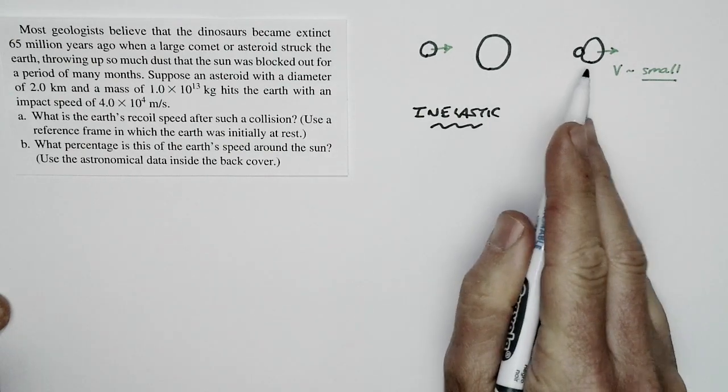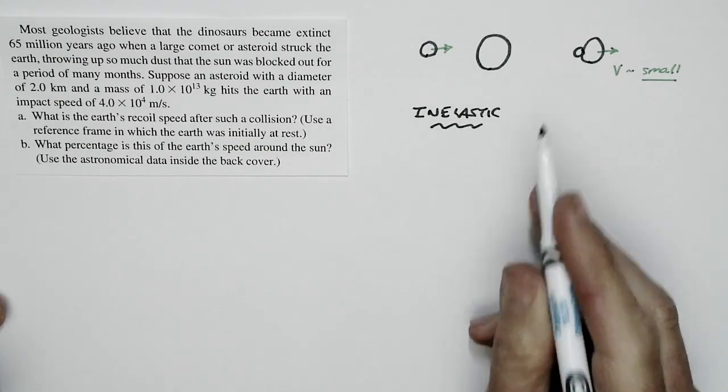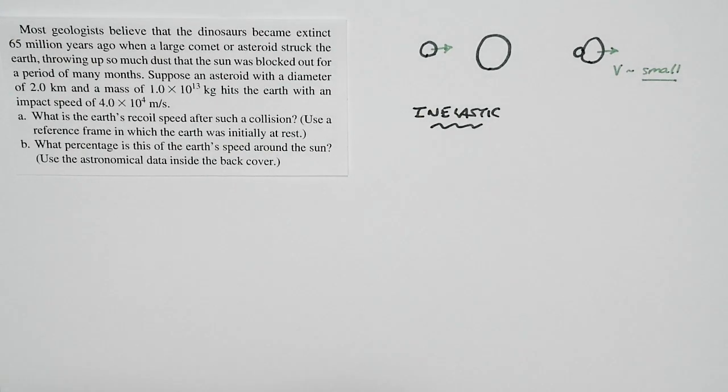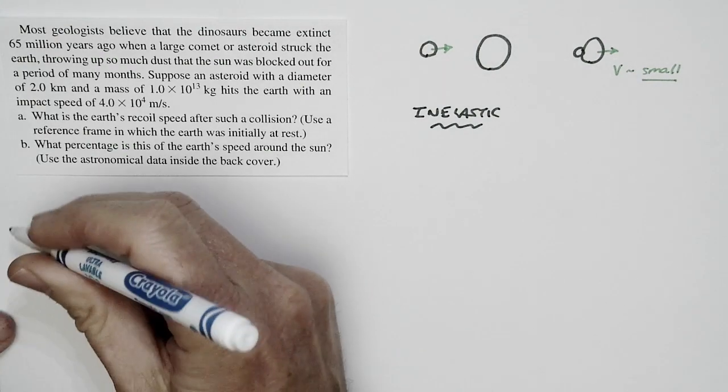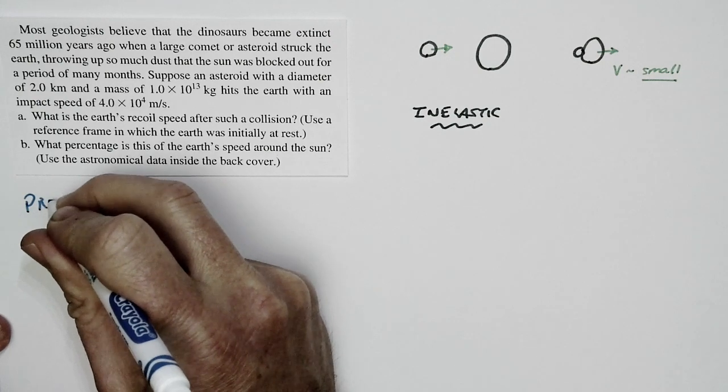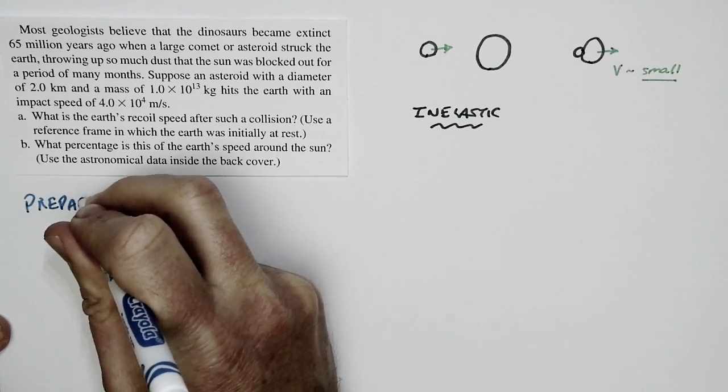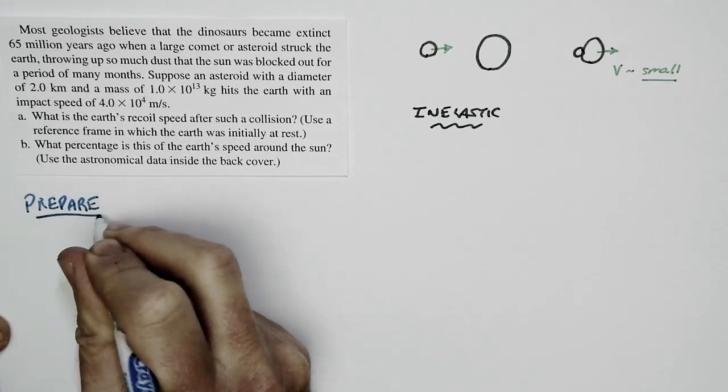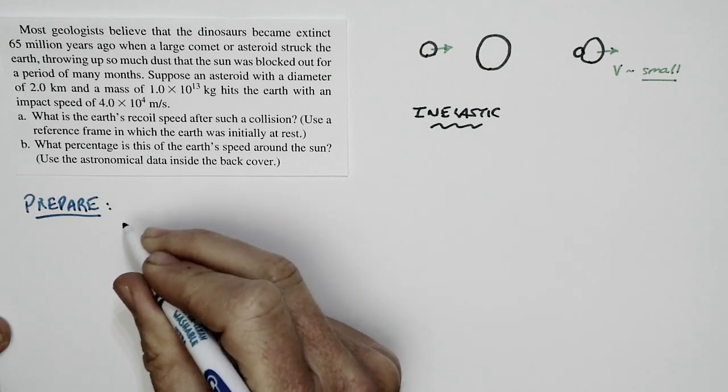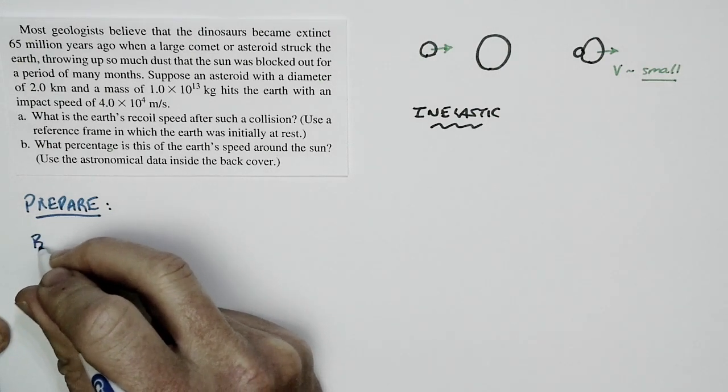It's an inelastic collision. There's no bounce. The asteroid doesn't hit and rebound. It hits, sticks, the Earth plus the asteroid move off together. And the basic way we're going to solve this problem is by using conservation of momentum. And to solve conservation of momentum problems, we prepare by doing a before and after picture.